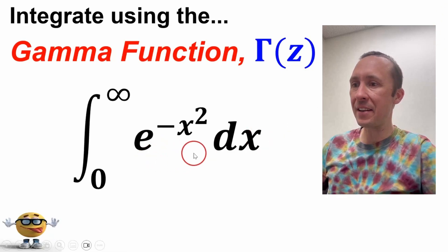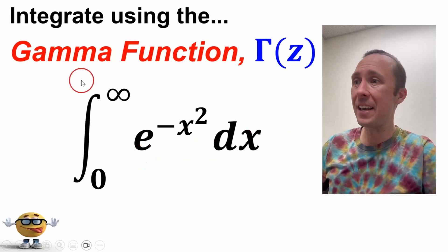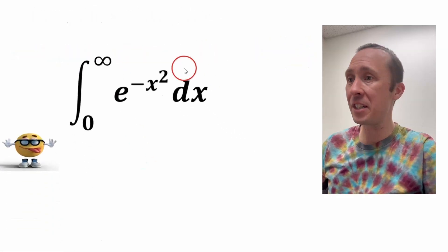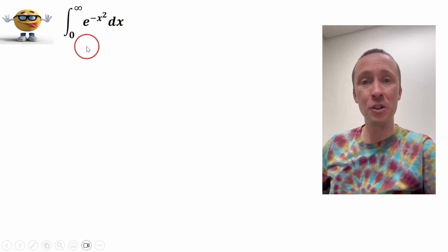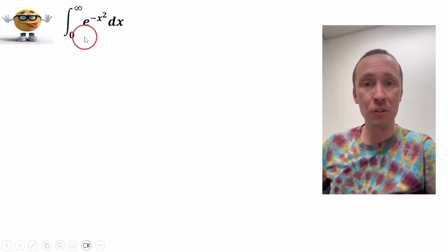My friends, the integral of e to the negative x squared is super easy if you know about the gamma function. If you don't, I've evaluated this integral in many other ways, so you can check those out. But if you do know what the gamma function is, it's really quick and easy.